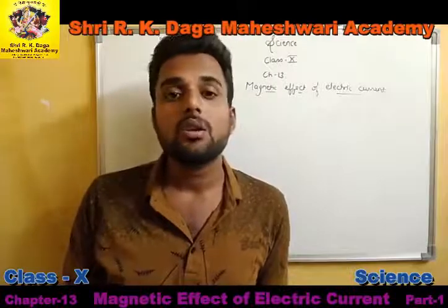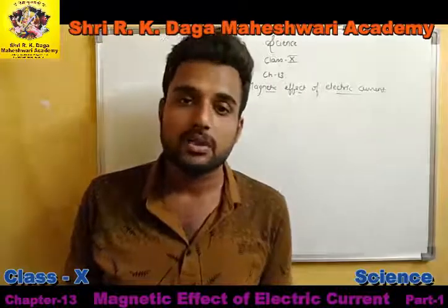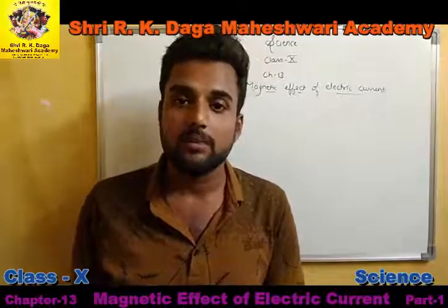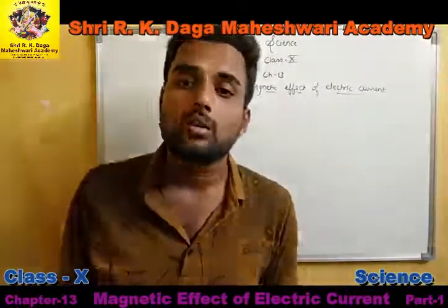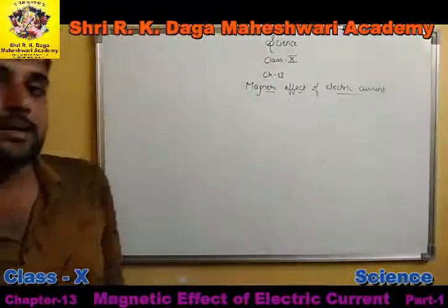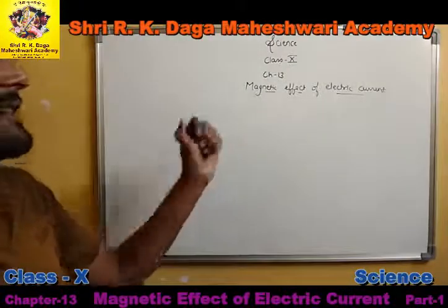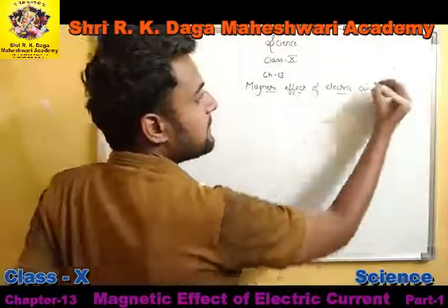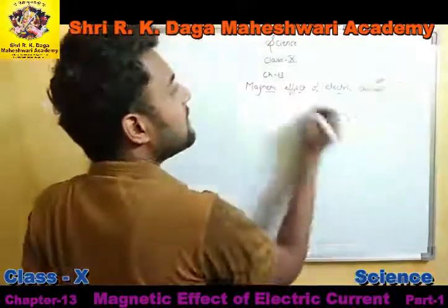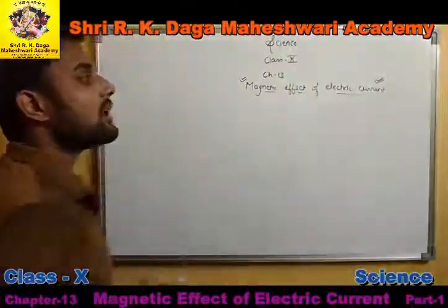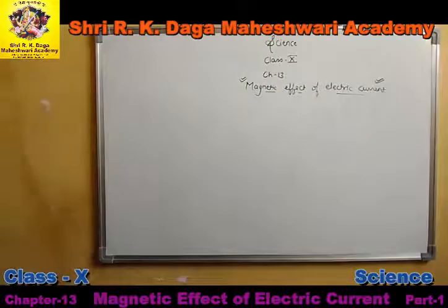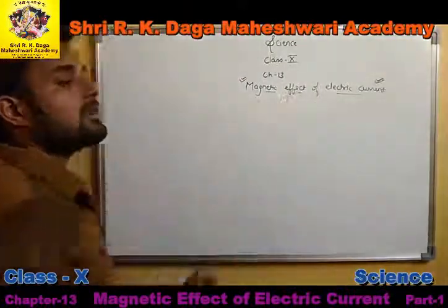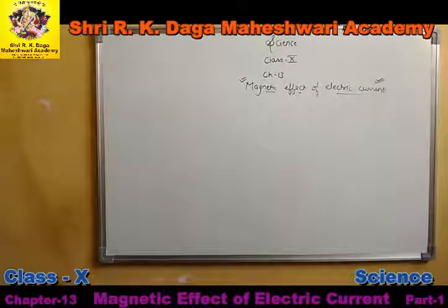For now, we only understand that a magnet is an object which has the ability to attract certain metals like iron, nickel, cobalt, and zinc. We will discuss in this chapter how electric current and magnetic field are correlated, how the magnetic field is generated, and how it relates to electric current.